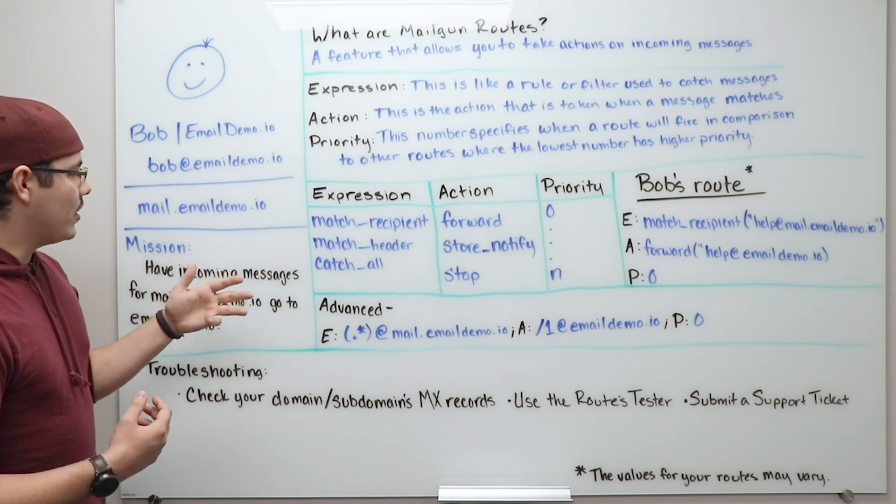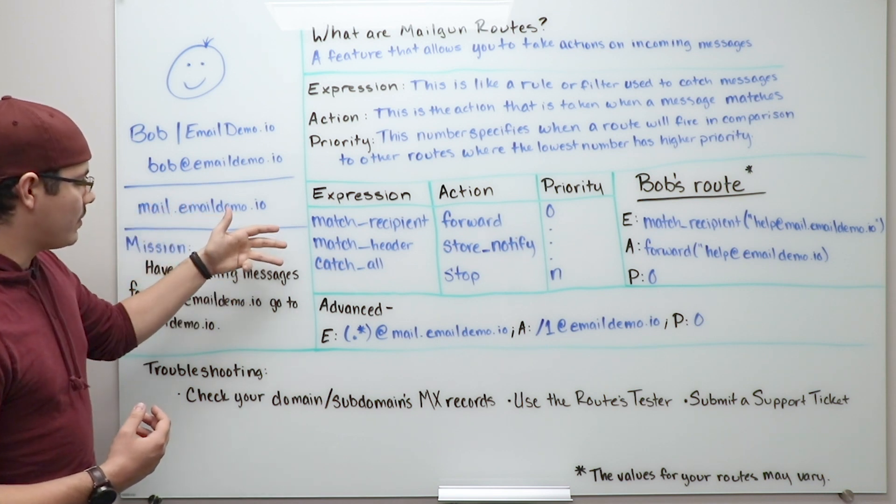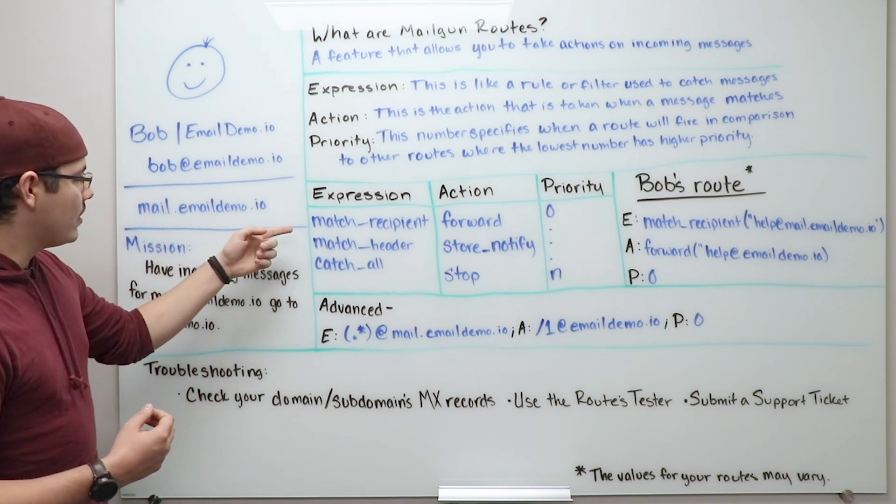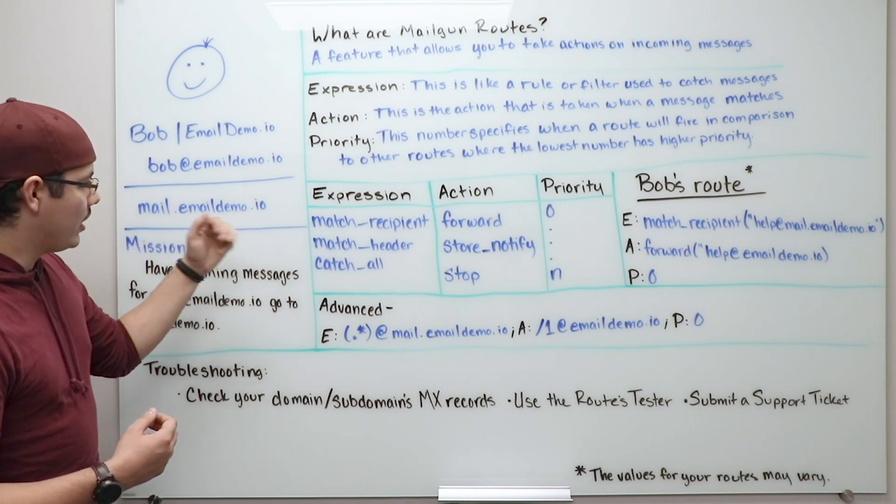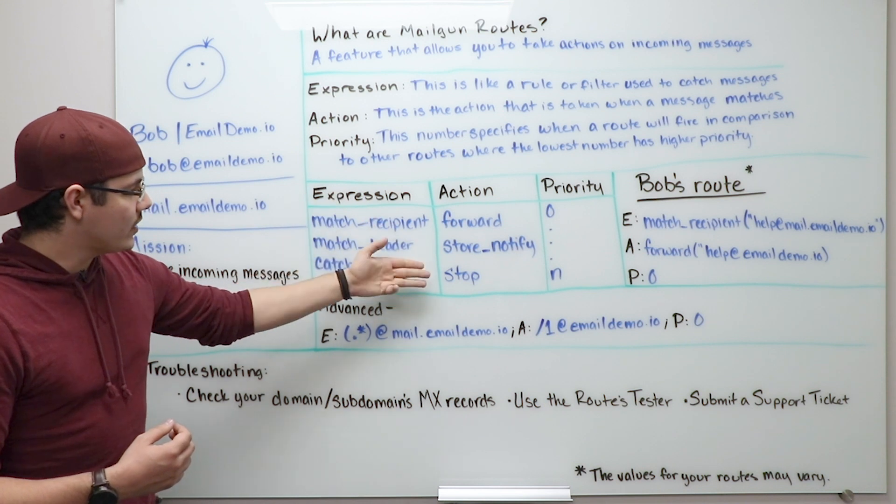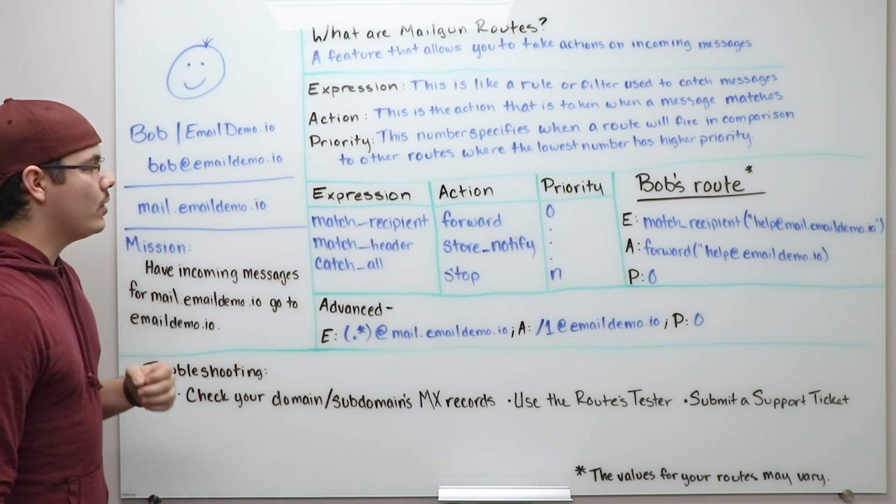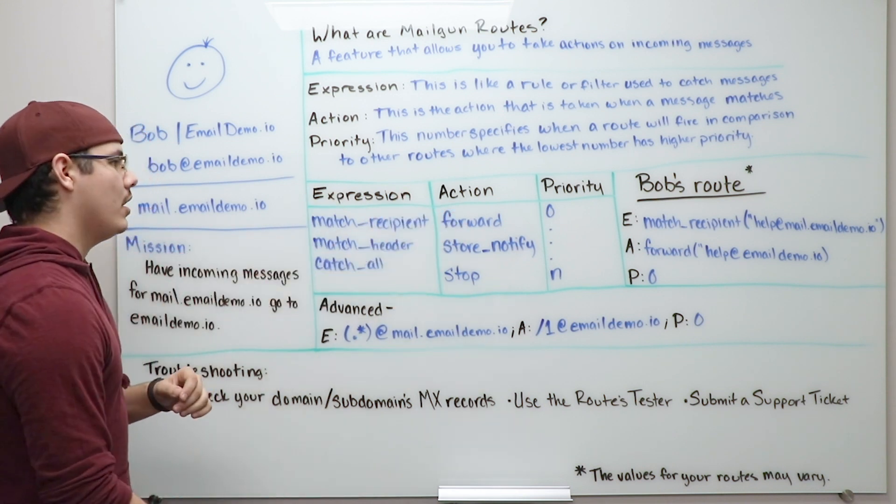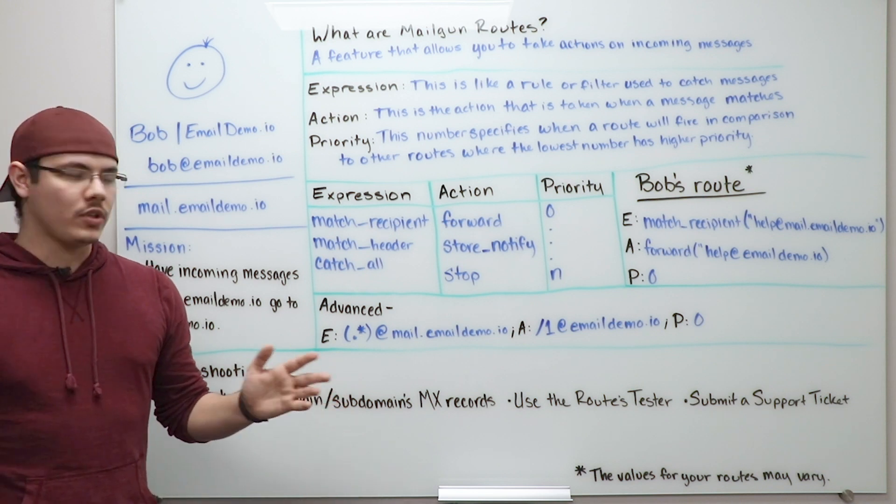Within every expression, there's three different types that you can make: you have a match recipient, a match header, and a catch all. Within an action, you have a forward, store notify, and stop. And in priority, of course, it's just a number from zero to whichever.